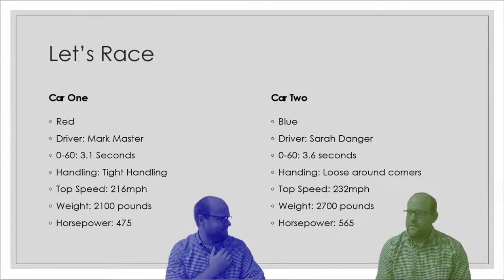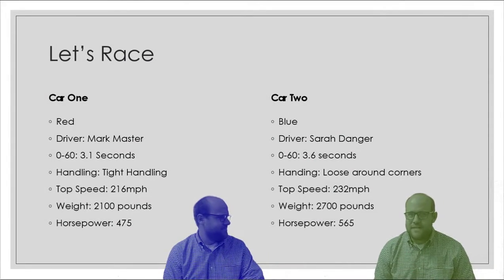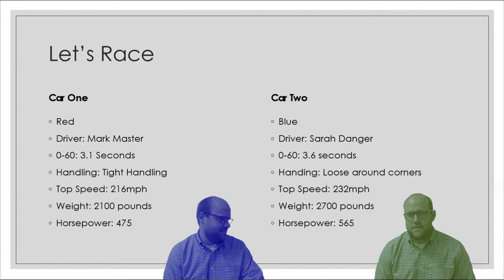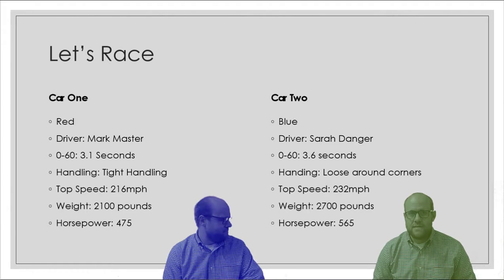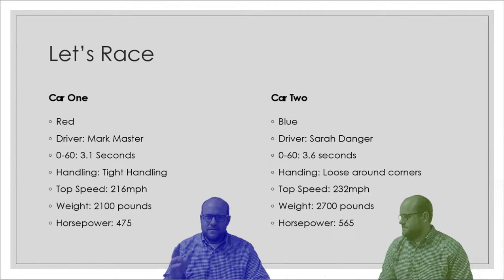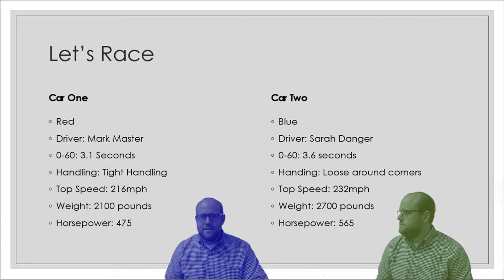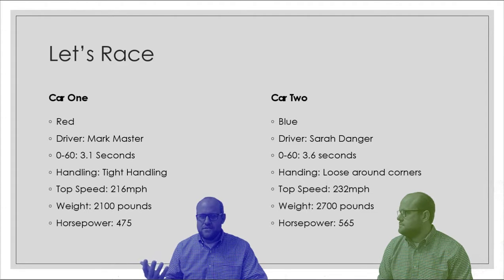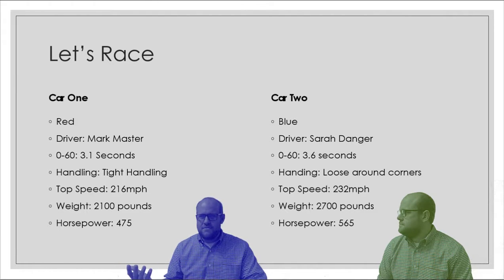Car 1 is going to win the race because it has a faster 0-60 time and it has better handling. This race is on a curvy track so handling is going to be important, and being able to accelerate quickly is going to let car 1 get in front of and stay in front of the other cars. No, car 2 is going to win because it's blue and blue is a faster color. Also, Sarah Danger is driving it — that's my friend's girlfriend and he wouldn't date somebody that loses races.